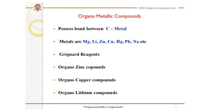Organometallic compounds possess a bond between carbon and a metal, denoted by C-M, where C stands for carbon and M stands for metal. The metals used include magnesium, lithium, zinc, copper, mercury, lead, sodium, etc.